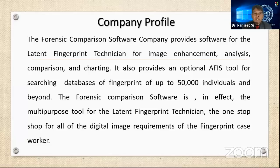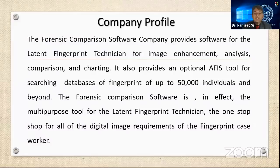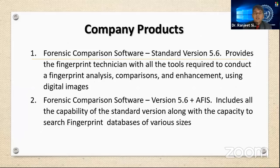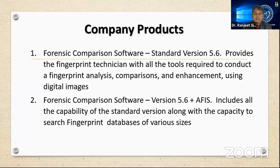The Forensic Comparison Software Company provides software for the latent fingerprint technician for image enhancement, analysis, comparison, and charting. It also provides optional tools for searching a database of fingerprints of up to 50,000 individuals and beyond. There are two software versions: one is the standard version 5.6, which provides the fingerprint technician with all the tools required to conduct fingerprint analysis, comparison, and enhancement using digital images. The second is version 5.6 plus SIFS, which includes all the capabilities of the standard version along with the capacity to search fingerprint databases of various sizes.